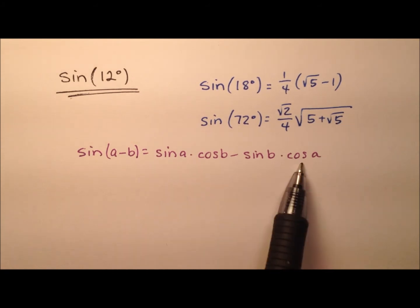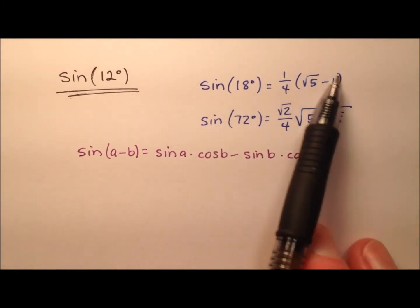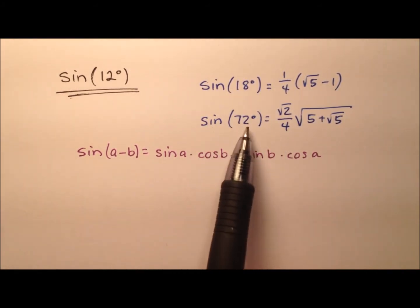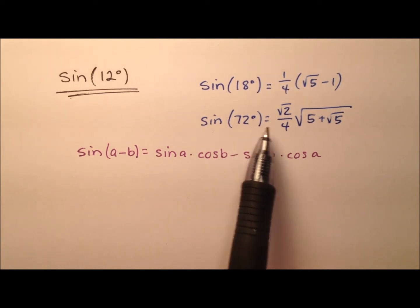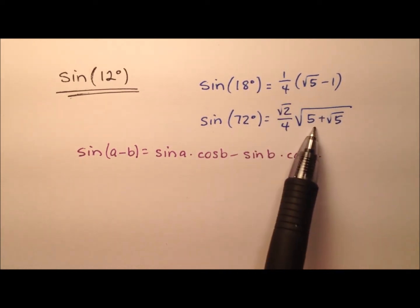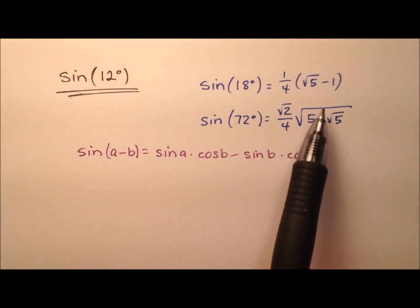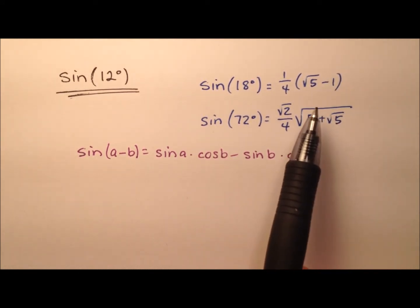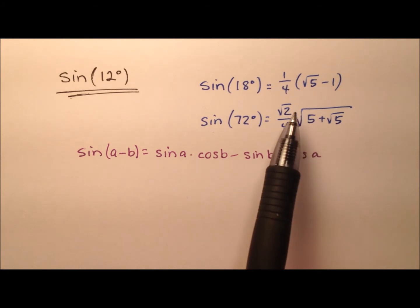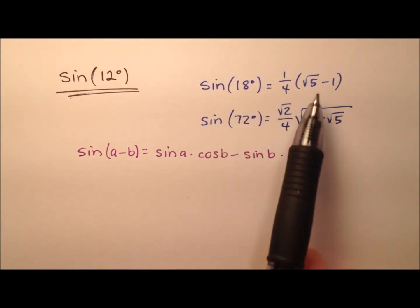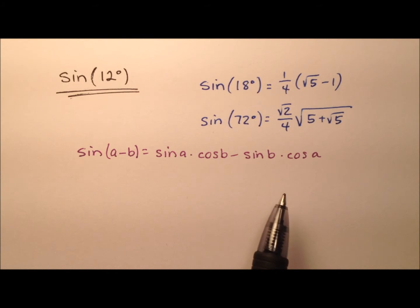Right here I have this expansion, and we're going to use two values: sine of 18 and sine of 72. These two values I worked through and found from scratch in two other videos, and so I have links to these videos in the comments below, so be sure to check those out if you're curious where these values came from.